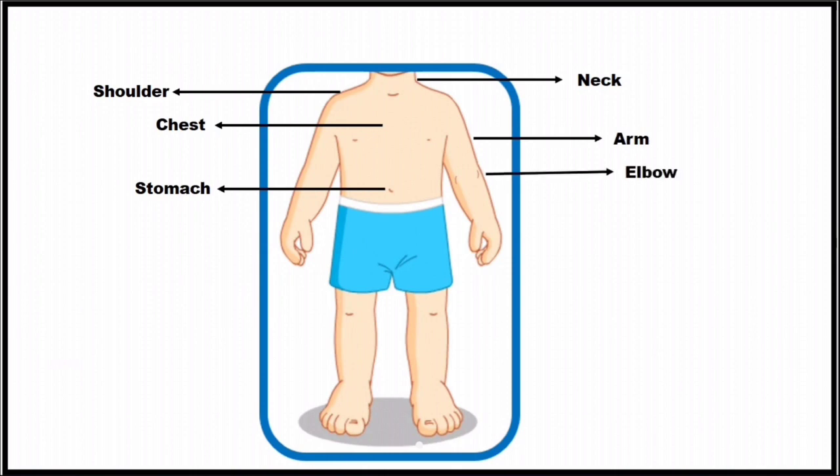Then comes elbow. Toe. Waist. Fingers. We have ten fingers. Four of them, two are your thumbs.